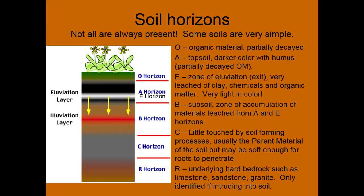Not all horizons are always present — some can be very simple, some a little more complex. Here we have a theoretical soil profile. This one has an O horizon, then our topsoil, then a white E horizon — so our O, A, E. That gets deposited into our B horizon; from the red color, this is maybe a clay deposit. Below that is our C horizon, which could be unweathered glacial till, lying on top of granite bedrock — our R horizon.